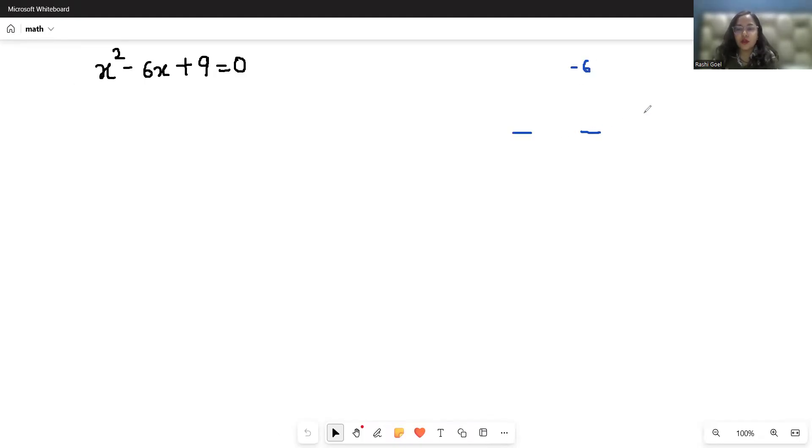So these two numbers can be -3 and -3. -3 + (-3) = -6, and -3 × -3 = +9.